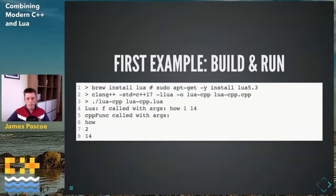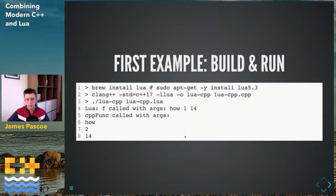This is how you build and run it. On a Mac you can use brew install lua. On Linux (Ubuntu or Mint) use sudo apt-get -y install lua5.3. Build with Clang — I tested this on macOS Catalina with the system compiler, nothing special. Run it by passing your executable the Lua file, and you get the expected output.